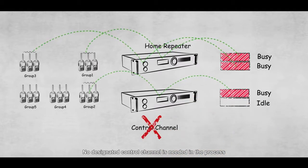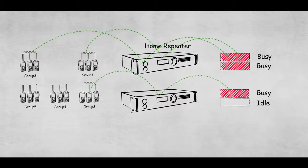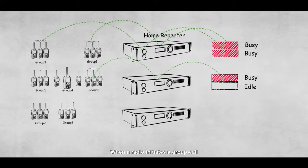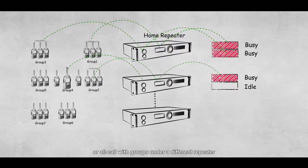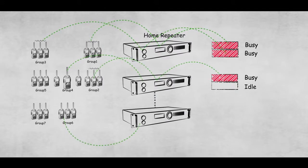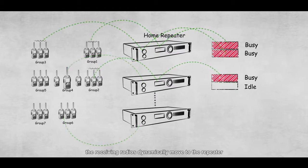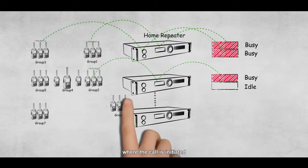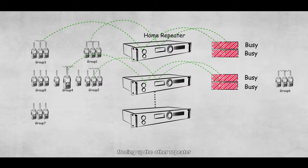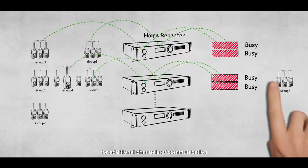No designated control channel is needed in the process. When a radio initiates a group call or all call with groups under a different repeater, the receiving radios dynamically move to the repeater where the call is initiated, freeing up the other repeater for additional channels of communication.